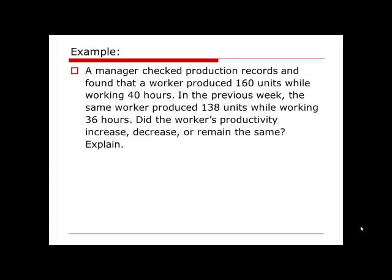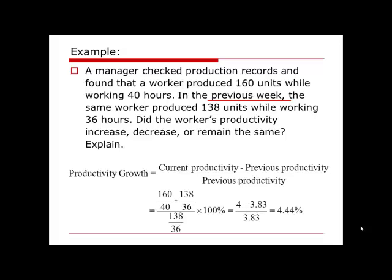Next example: a manager checked production records and found that a worker produced 160 units while working 40 hours. In the previous week, the same worker produced 138 units while working 36 hours. Did the worker's productivity increase, decrease, or remain the same? When we check whether productivity increased, decreased, or remained the same, we only need to look at the productivity growth. If the growth is a positive number, productivity increased. If negative, productivity decreased. If productivity remains the same, the productivity growth will be zero. Given this information, with the previous week and current week clearly stated, we can substitute everything into the formula.